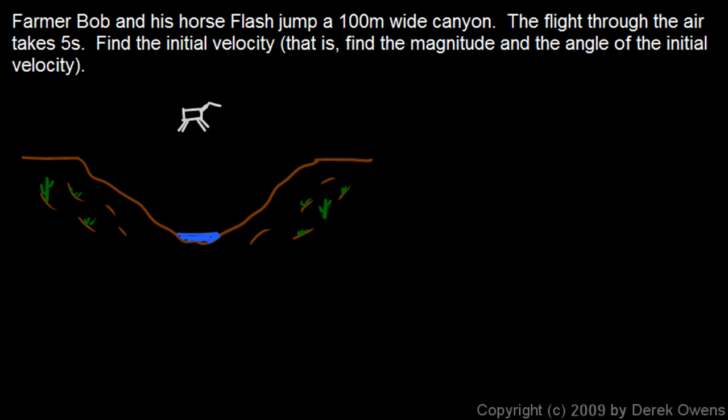So here's Farmer Bob on his horse, and he's jumped at some initial velocity, v0, and he's moving in this parabolic path, and he lands over there 100 meters away. And what we're trying to find is this initial velocity vector. We need to know how many meters per second it is, and the angle here, I'll call the angle theta, how much that vector is inclined above the horizontal. And we can find that just on this information, the width here and the time in the air.